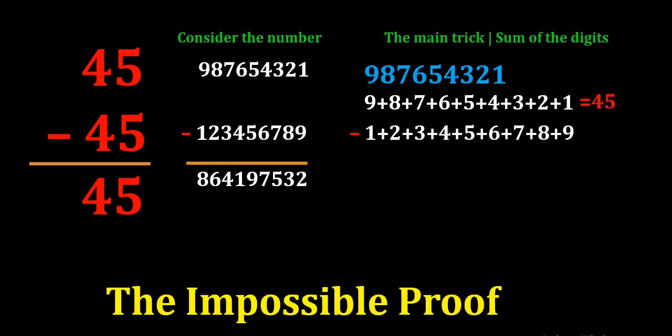In the second number, it is 1 plus 2 plus 3 plus 4 plus 5 plus 6 plus 7 plus 8 plus 9, which equals 45.